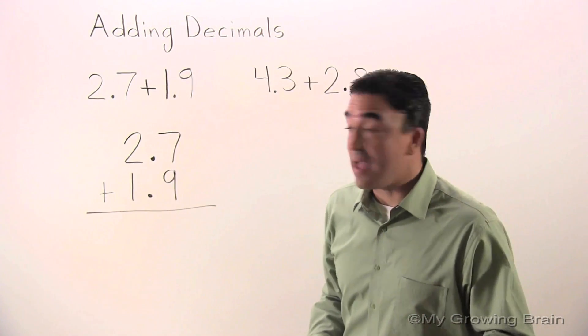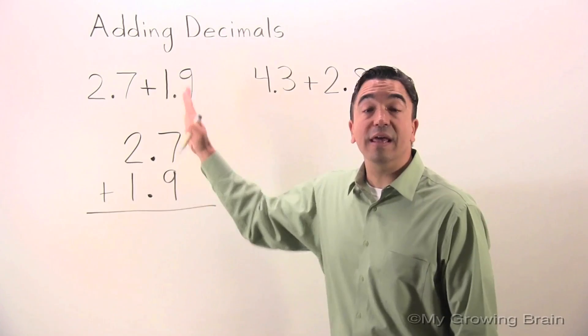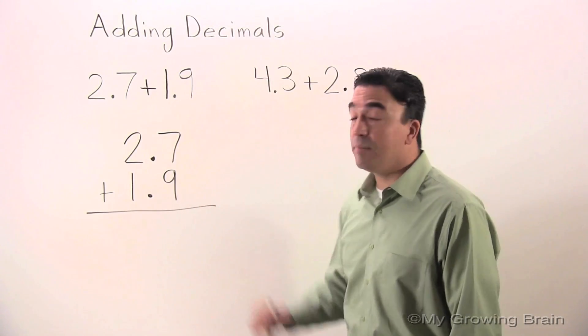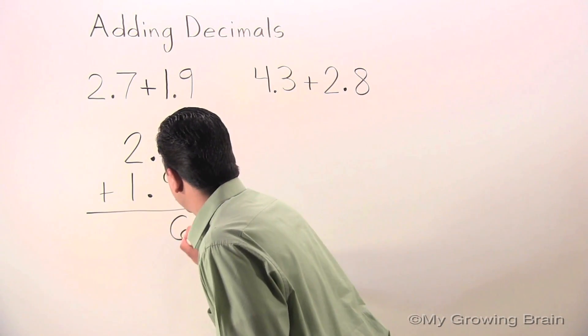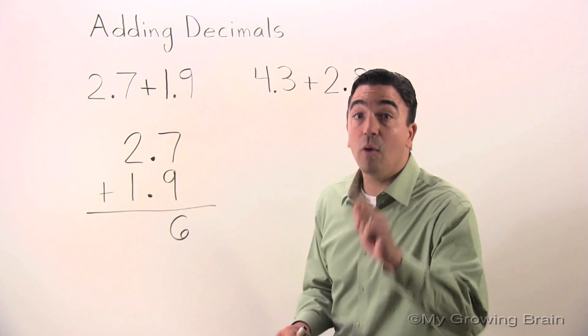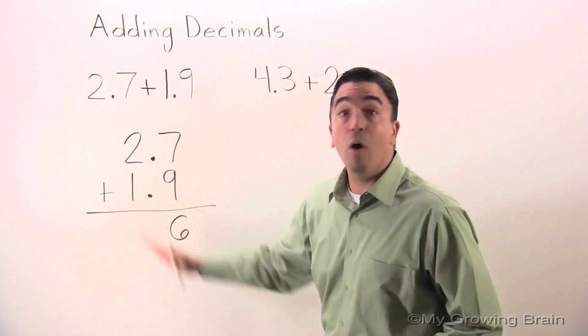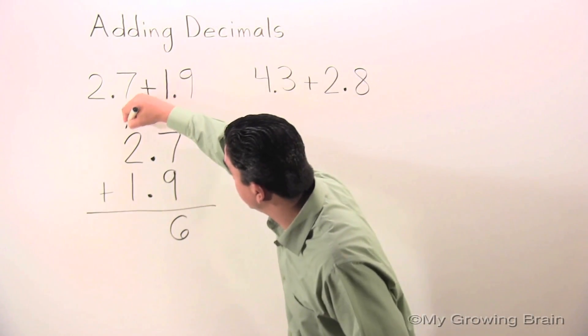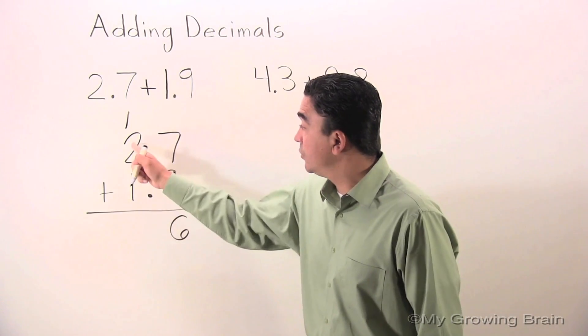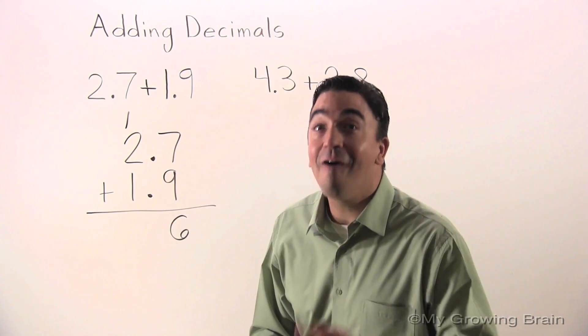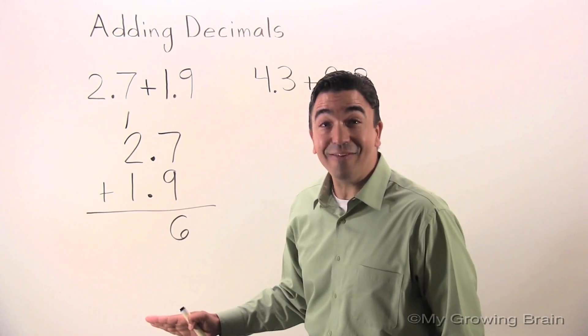Now we're ready to add. We start in the tenths. 7 plus 9 is 16. Carry the 1 or regroup it into the ones column. Now let's add the ones column. 2 plus 1. Nah-ah! First we need to drop the decimal.